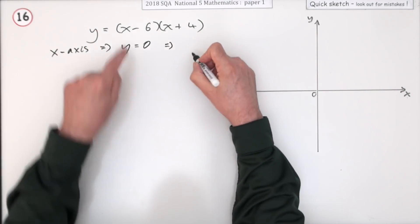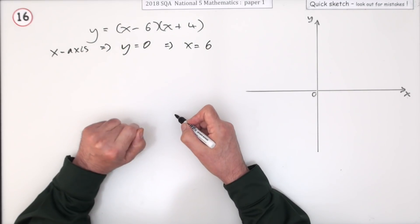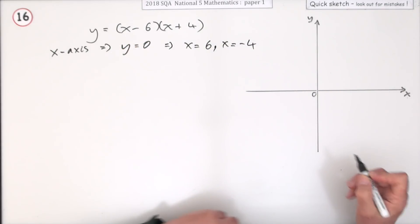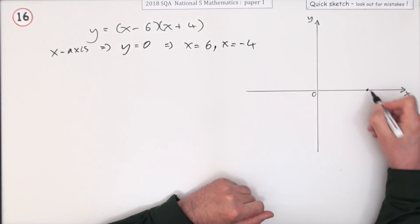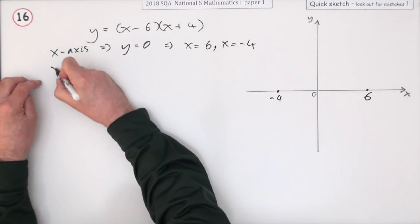So I could put them in just approximately: there's the 6, there's the negative 4.